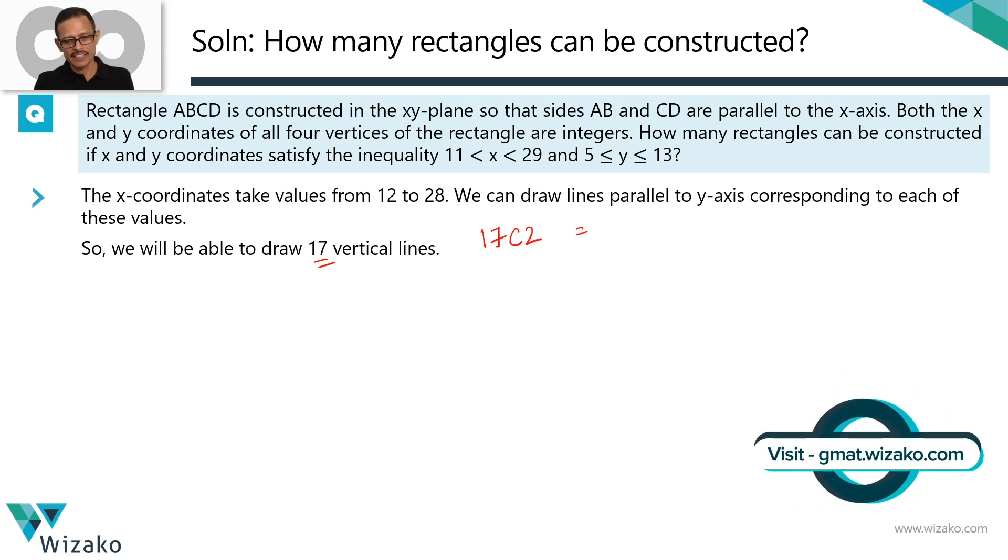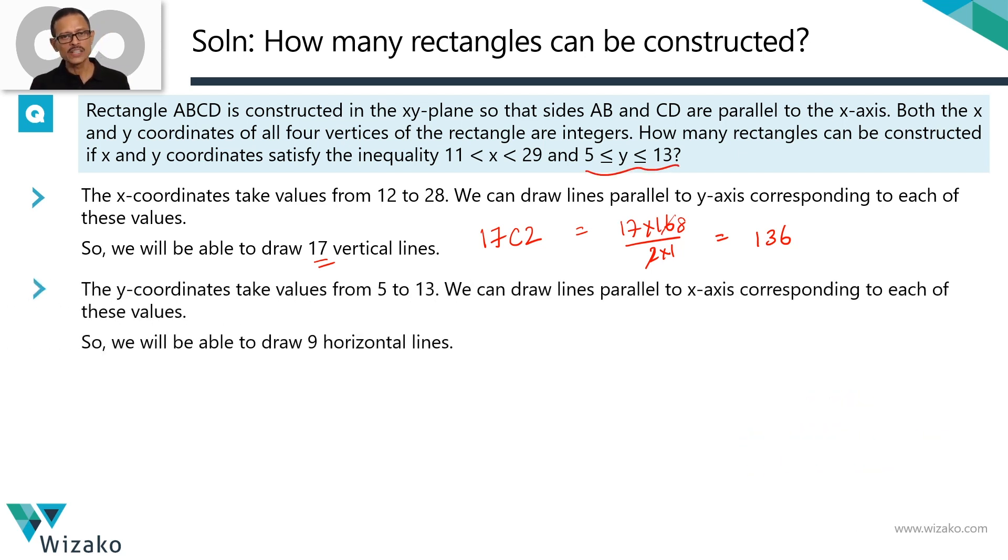Just compute the value right away. So that's 17 into 16 divided by 2 into 1. 17 into 8 is what we have, which is equal to 136 ways we can pick two vertical lines. How many horizontal lines do we have? We have nine Y values. Corresponding to each one, we'll have a horizontal line. We have seen it in the last slide.